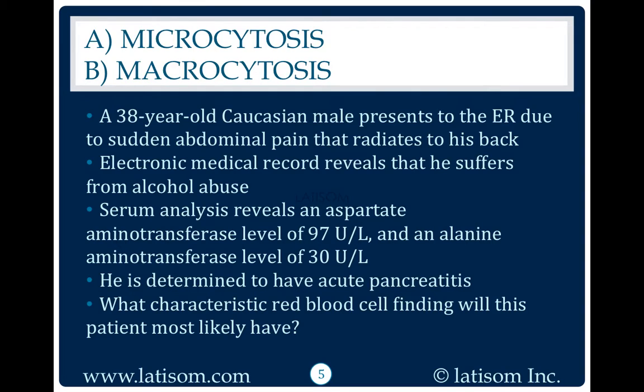A 34-year-old Caucasian male presents to the ER due to sudden abdominal pain that radiates to his back. Electronic medical record reveals that he suffers from alcohol abuse. Serum analysis reveals an aspartate aminotransferase level of 97 units per liter and an alanine aminotransferase level of 30 units per liter. He is determined to have acute pancreatitis.